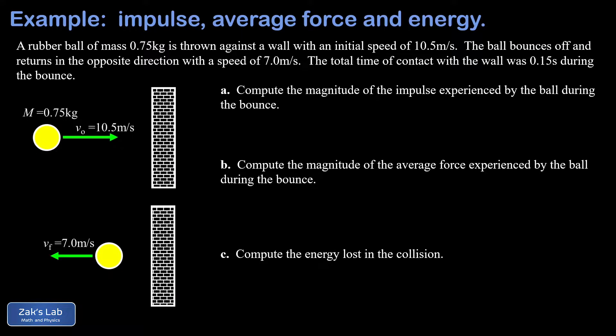In this video we're analyzing the bounce of a rubber ball aimed horizontally at a wall with an initial velocity of 10.5 meters per second. We're given the mass of the ball as 0.75 kilograms.